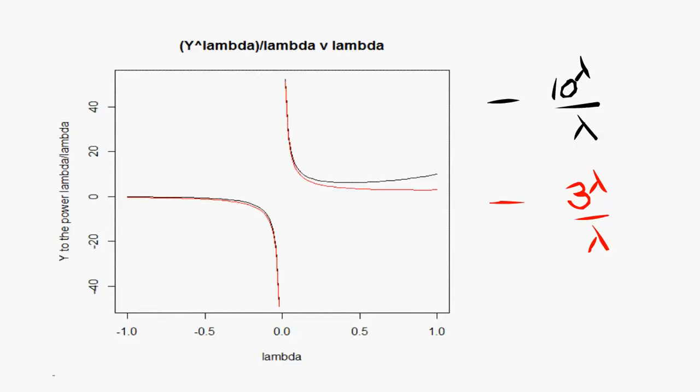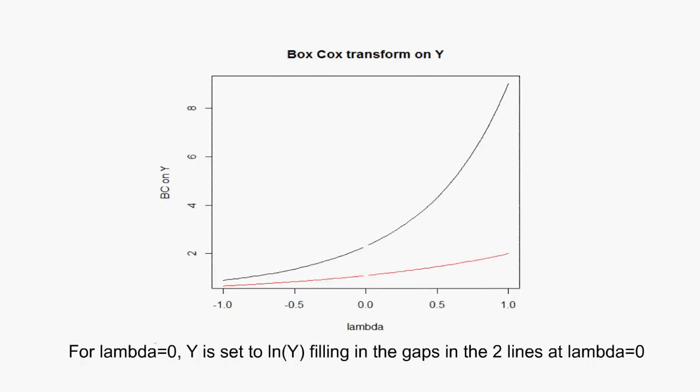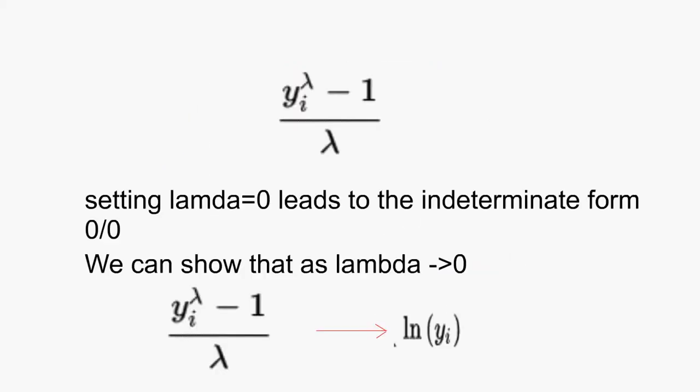Let's adjust the second attempt by subtracting one from each Y to the power of lambda before scaling. I.e. we'll just do the BC transform. Now we see that both order of the data are preserved and there is no discontinuity in the parameter space. Hooray.